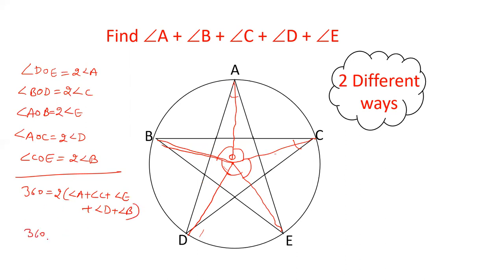Dividing by 2, 360 by 2, angle A, angle B, angle C, angle D, angle E. Cancel out, we get 180. In this way, the sum of the five-pointed star angles is 180.